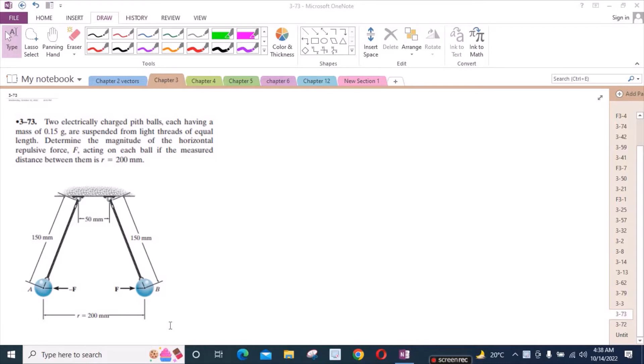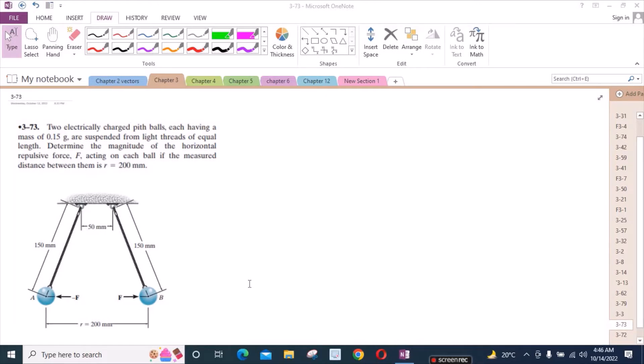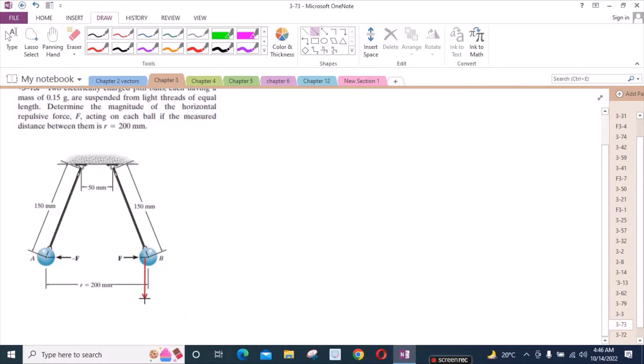To solve this problem, first we have to consider only half of the diagram because the other half is symmetrical. If I consider the right-hand side of this diagram, then I have the weight of the pith ball acting downwards. This is the weight, and I have tension in the string in this direction.